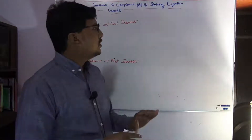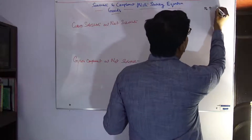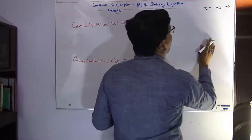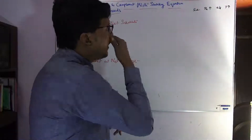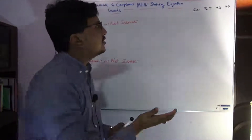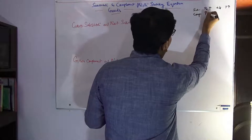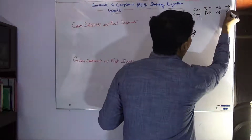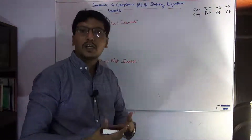Recall that when the price of X increases, a consumer reduces consumption of commodity X and increases consumption of Y — that means he is considering Y as a substitute good. In the case of complements, when the price of X increases, the commodity X decreases, and as a result the demand for commodity Y may also decline, meaning Y is considered a complementary good.